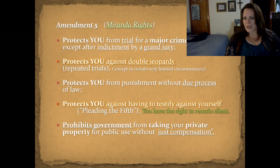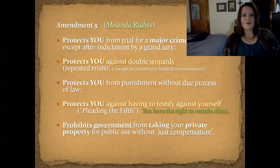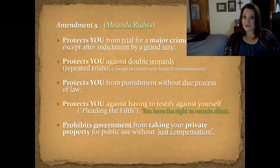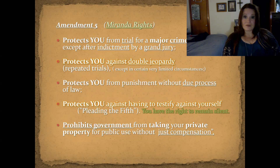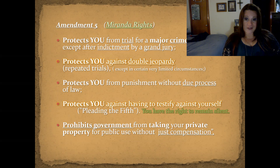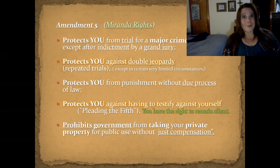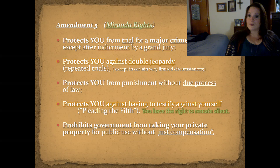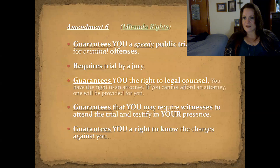The Fifth Amendment is partially where we get our Miranda rights. It protects you from trial for a major crime except after indictment by a grand jury. It protects you against double jeopardy, and from punishment without due process of law. It protects you against having to testify against yourself — you've heard of pleading the Fifth, you have the right to remain silent. And it prohibits the government from taking your private property for public use without just compensation.